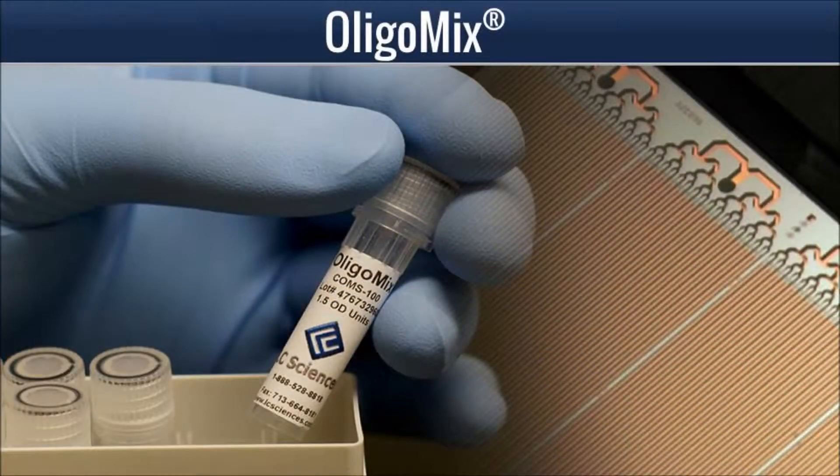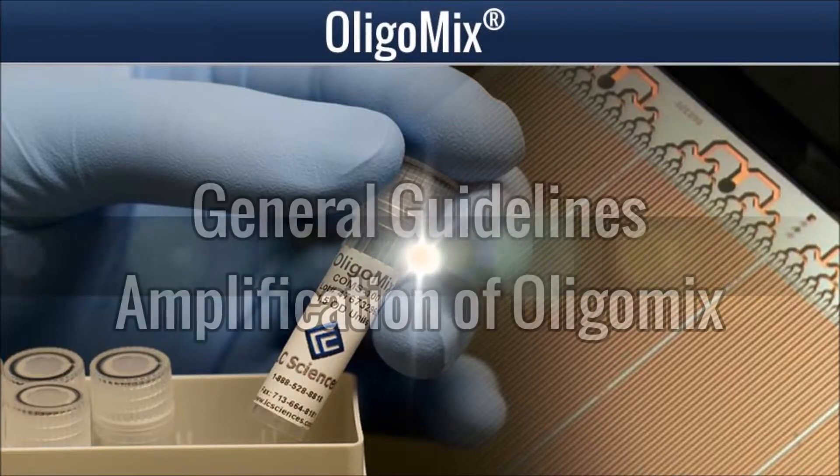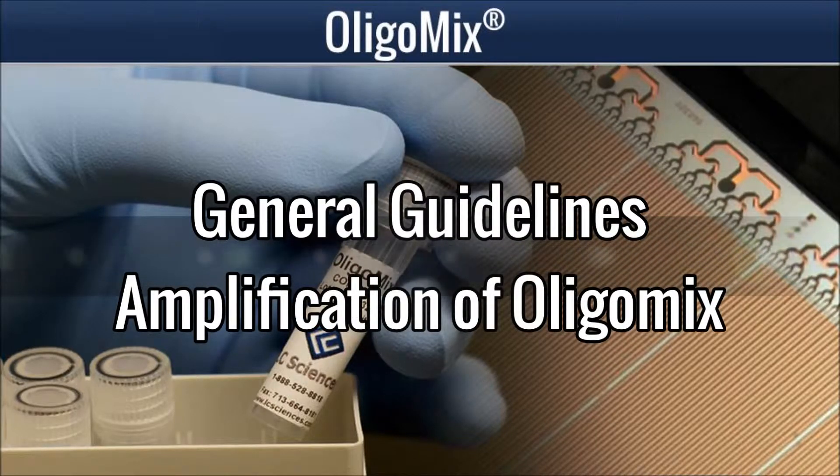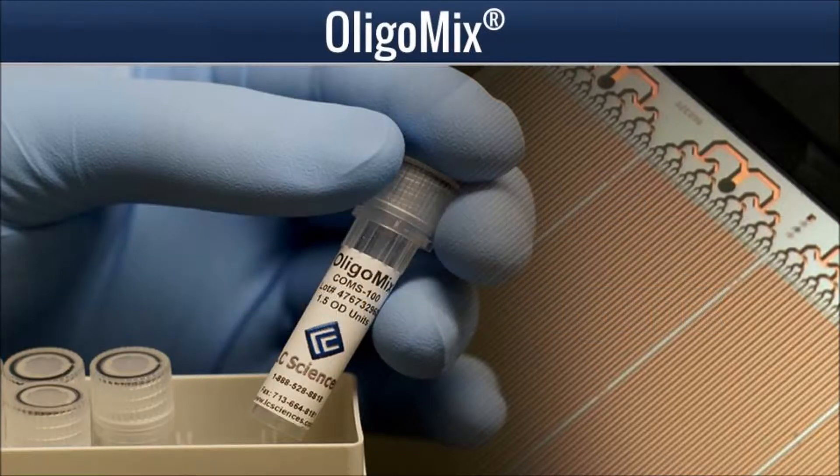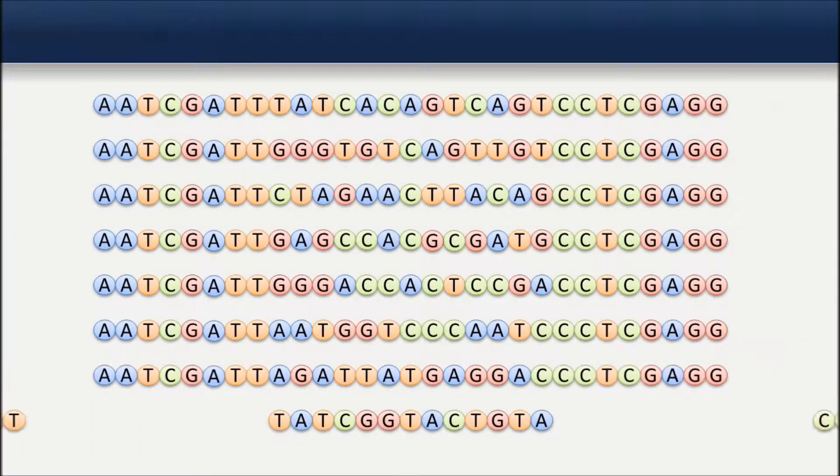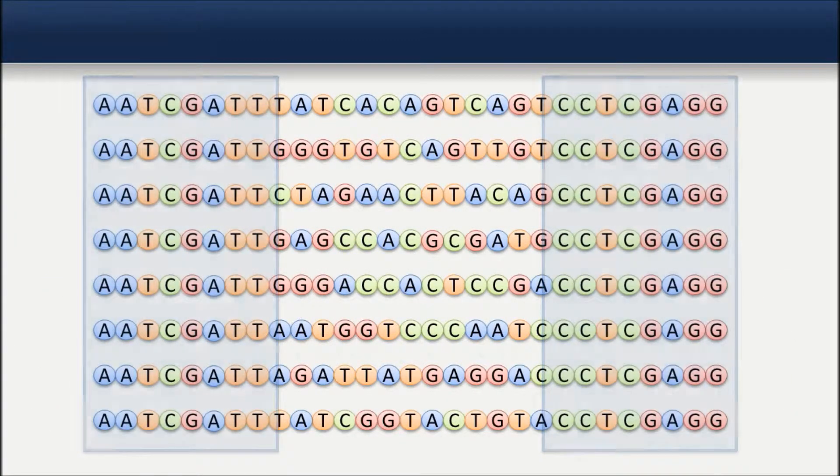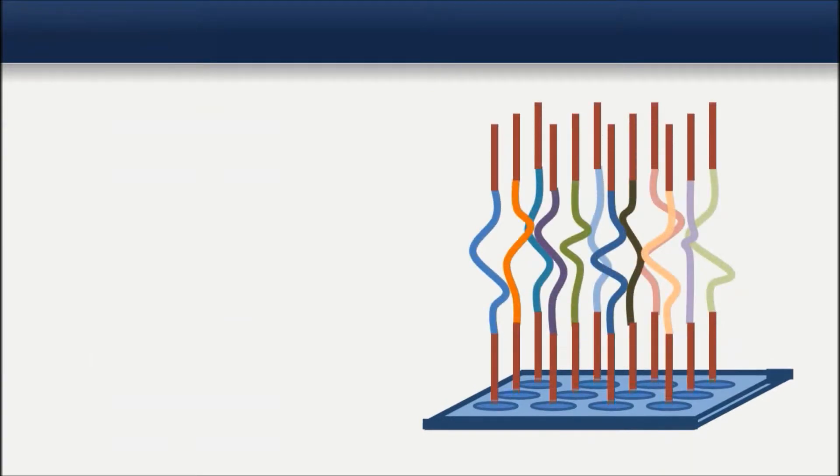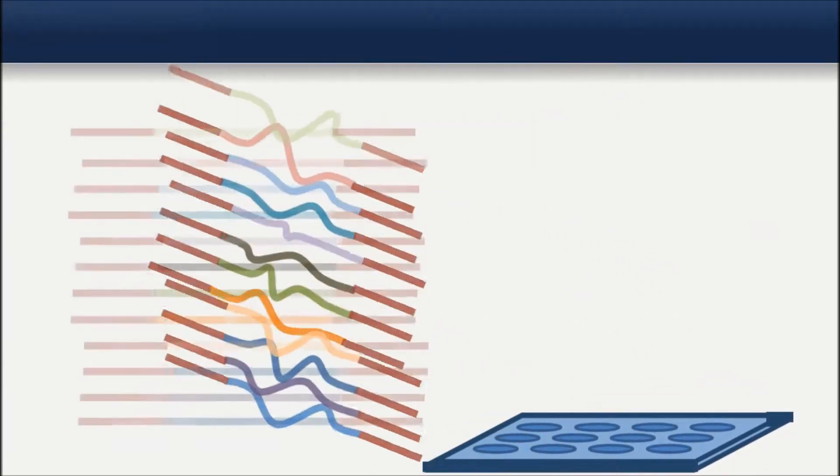We have some general use guidelines for primer design and amplification of OligoMix. However, as all applications are unique, these instructions are to be used as general guidelines only, not as specific protocols. Incorporate one set of common primers in all sequences and use PCR to amplify the product before use. An added benefit of the amplification is a purification effect since some of the failure sequences would not be amplified.